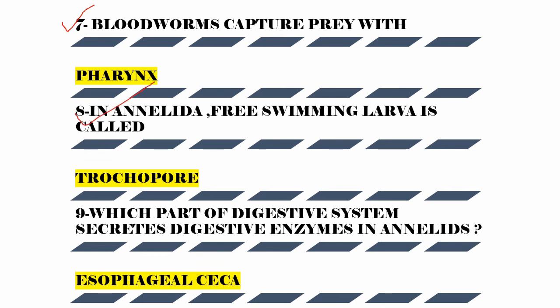The eighth question is: what is the free-swimming larva of Annelida called? The free-swimming larva of Annelida is called a Trocopore.